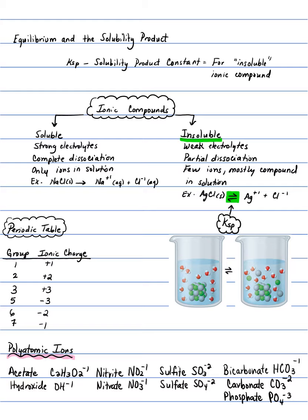Equilibrium and the solubility product. The solubility product is what we have when insoluble compounds are dissolved in water. K is an equilibrium constant, and we use Ksp when we have the equilibrium constant for an insoluble compound that is being dissolved in water. Ksp: K for your equilibrium constant, sp for the solubility product.